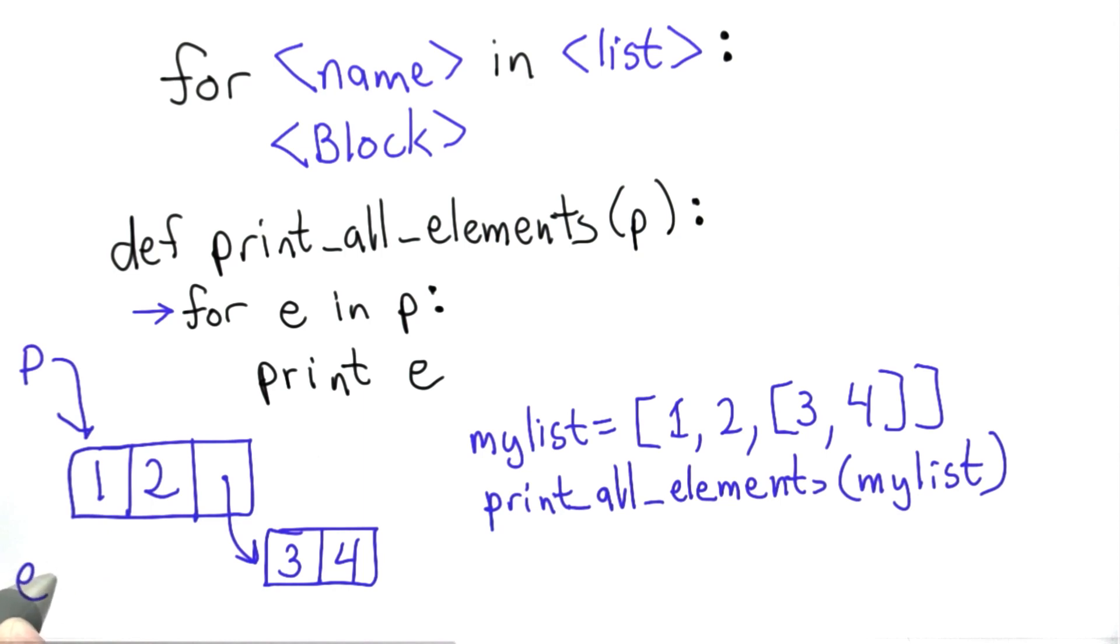Then we continue. The next time through the loop, e will refer to the second element of p. We evaluate the body of the loop, printing out that value, which is 2. Then we continue in the loop.